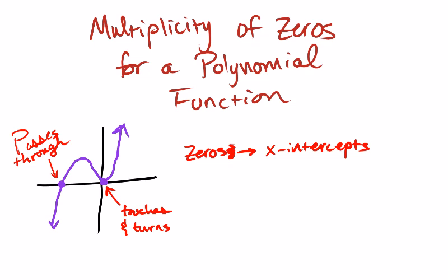And so multiplicity of zeros allows us to know what the graph is going to do at the x-axis. So for this x-intercept here, where it passes through, this one has what we would call an odd multiplicity,